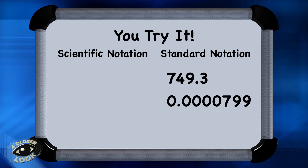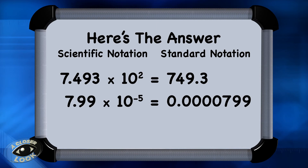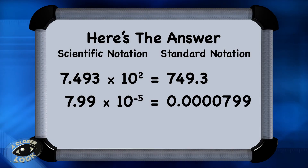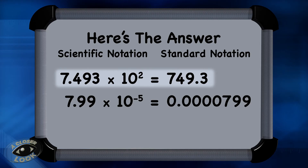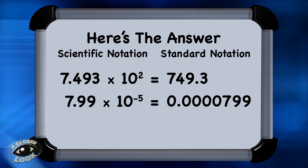Now we're going to let you practice a few on your own. Pause the video and try the following problems, then come back, press play, and check your answers. [Practice problems: 749.3 and 0.0000799] Hopefully for the first problem, you moved the decimal until it was right after the 7. Since the decimal was moved 2 places, and since this number represents a number larger than 1, the exponent would be a positive 2 — giving 7.493 times 10 to the second. In the second problem, you had a number smaller than 1 to convert to scientific notation, so once it's converted, it should have a negative exponent. The decimal moves 5 places, and the answer is 7.99 times 10 to the minus 5th power.